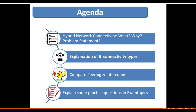Moving to the agenda for this video: we have provided the definition of hybrid network connectivity as well as the problem statement of why we're doing this video. Next, we will provide an explanation of the six connectivity types and their characteristics, and perform a comparison between them. We also focus on comparing peering and interconnects to clear up the most confusing points. Finally, we will walk you through some examples of practice questions taken from exam topics.